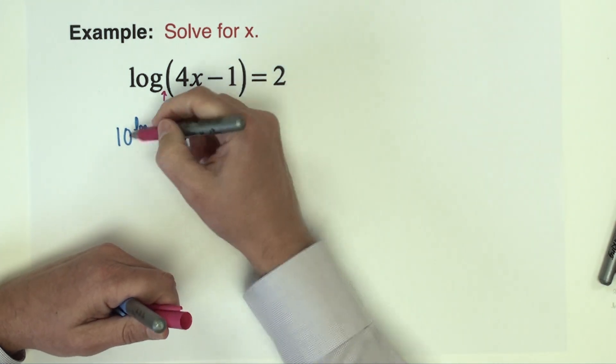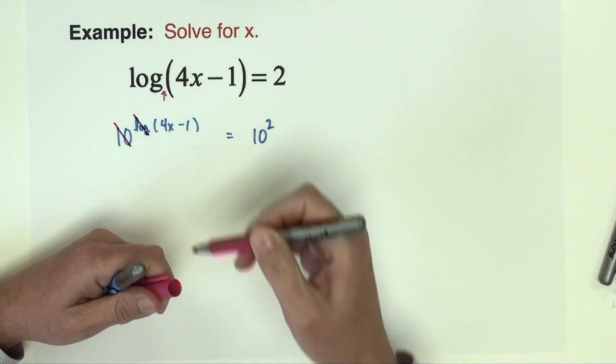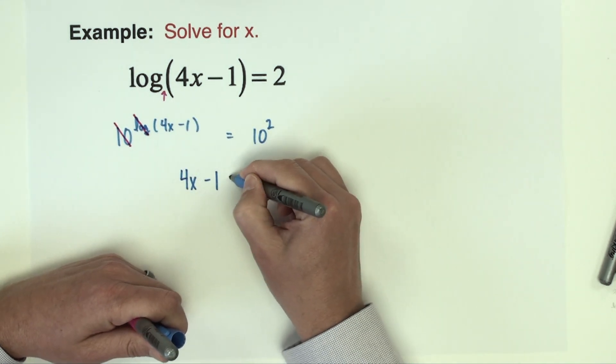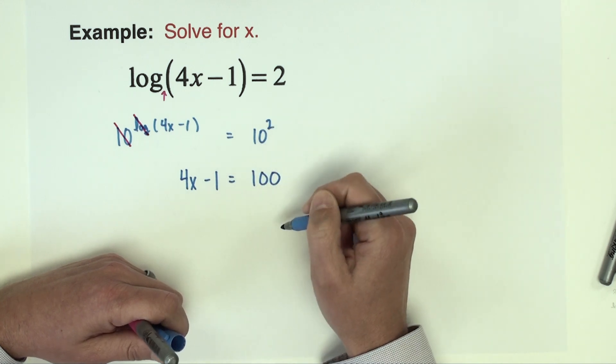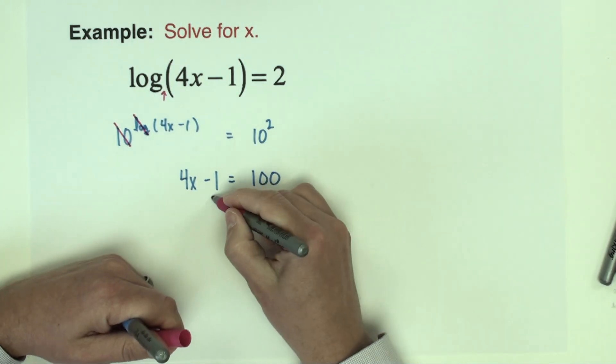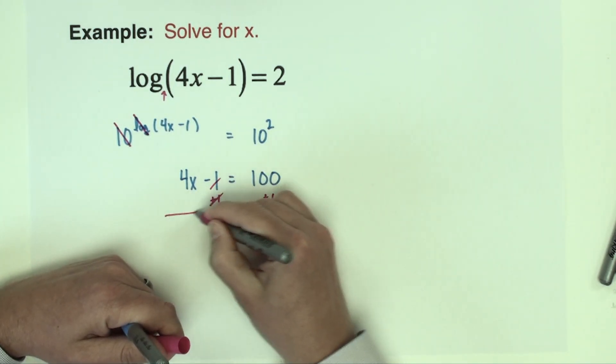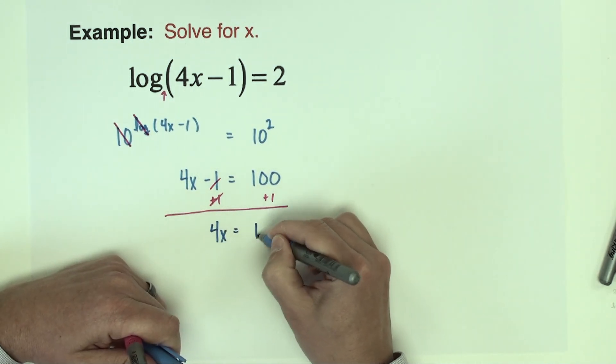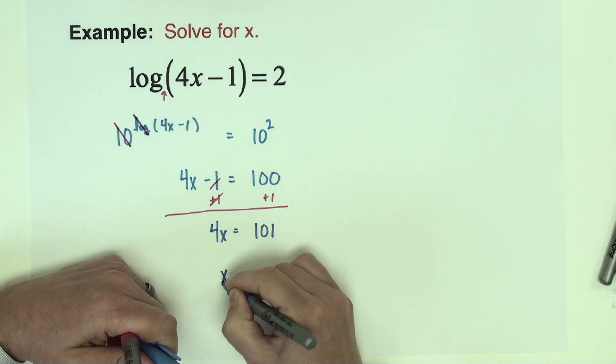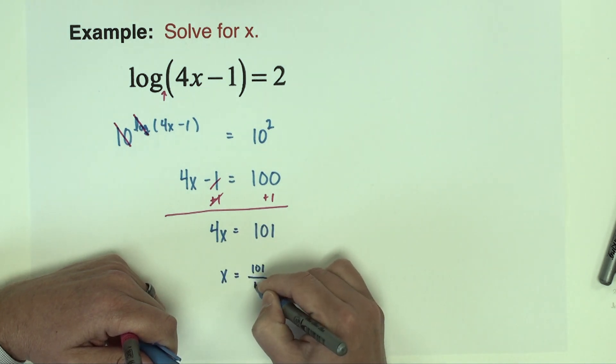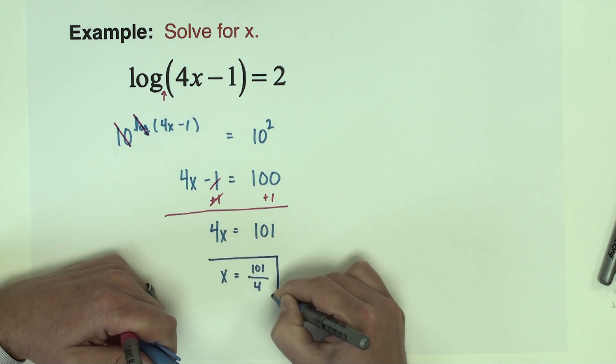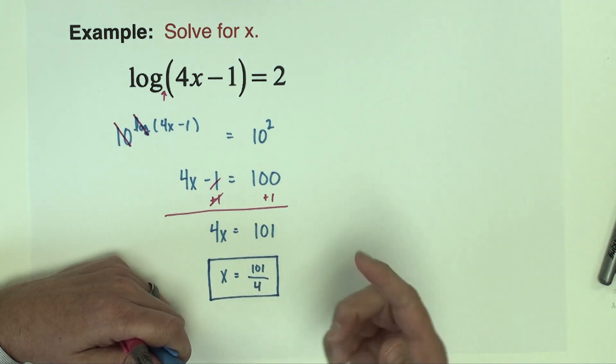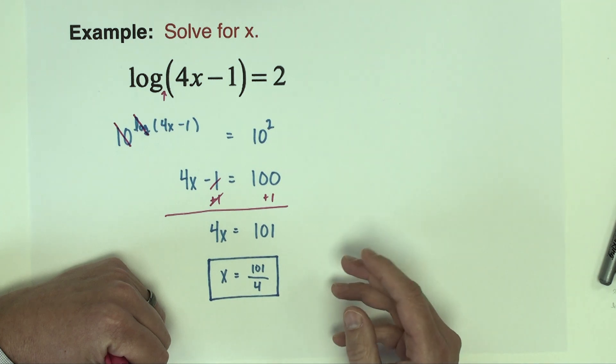This is going to be 10 raised to the log 4x minus 1 equals 10 raised to the second power. Because I have matched bases 10 and log base 10, those are going to be canceled from the problem and I have now just 4x minus 1 equals 10 to the second power which is 100. We're going to next add 1 to both sides, so we have 4x equals 101. Divide both sides by 4, x equals 101 fourths. I'm happy with 101 fourths as long as it's a reduced fraction which it is.